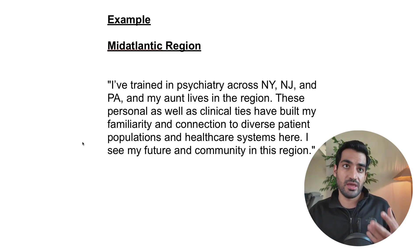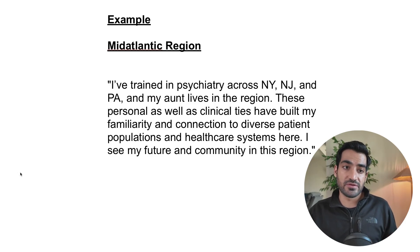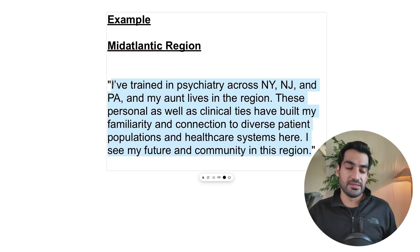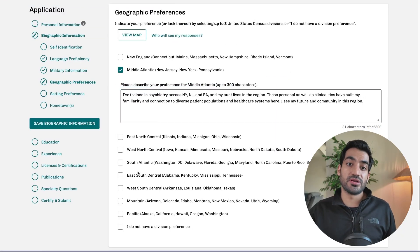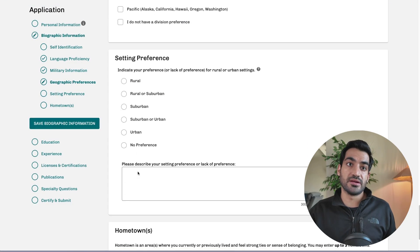It's basically talking in the first person with a narrative tone to it. So you take this explanation and put it in, and that's how you pick your three geographic signals.